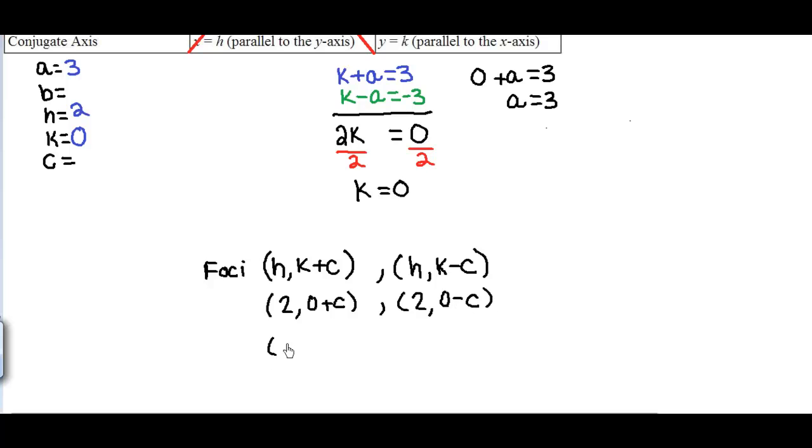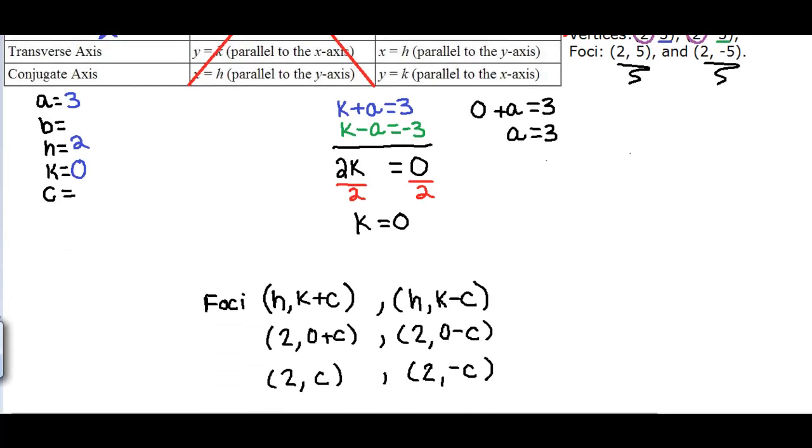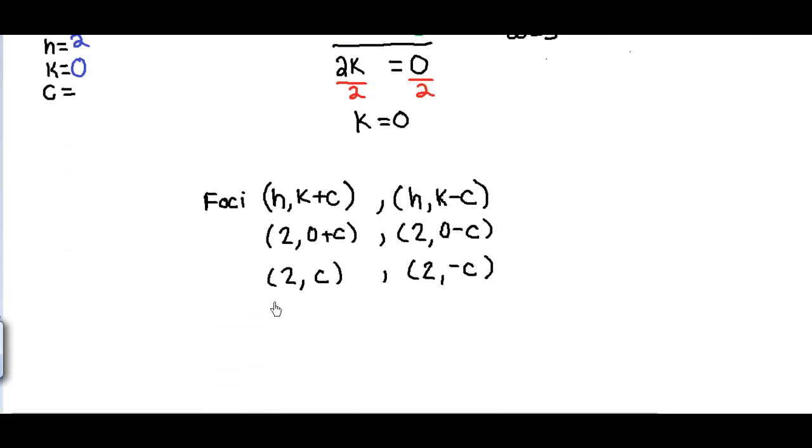Next, I just want to simplify that step to clean it up, so we know we have the points (2, C) and we also have (2, -C). Now we are at the point where we can go back and review our information that was given, and we see that we have the point (2, 5) and the point (2, -5), so we can essentially set those points equal to what we had from the standard form.